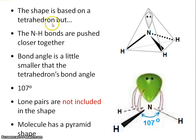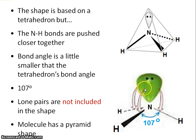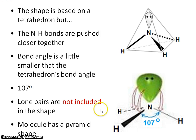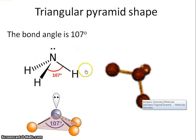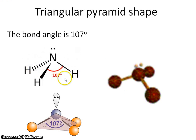You might expect a tetrahedral shape when dealing with 4 groups of electrons, but because of the extra repelling effect of the lone pair, the bond angle drops from 109.5 down to 107 degrees. Since you can't see the lone pair of electrons — only the bonds — the shape is described as a pyramidal or triangular pyramid shape.